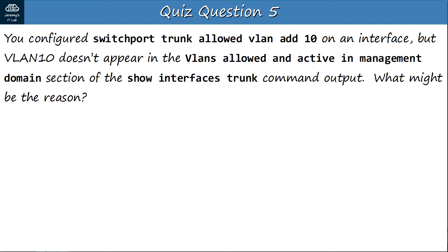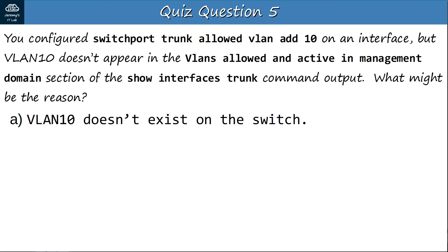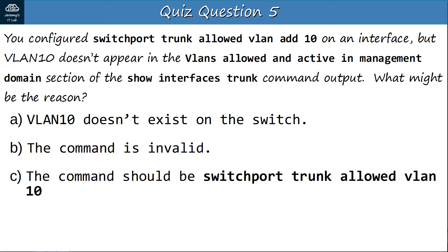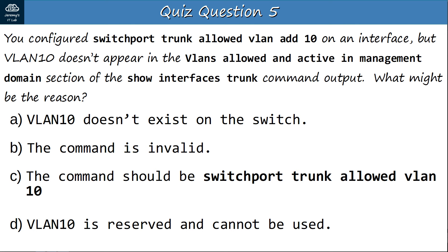Question 5: You configured 'switchport trunk allowed vlan add 10' on an interface, but VLAN10 doesn't appear in the VLANs allowed and active in management domain section of 'show interfaces trunk'. What might be the reason? A: VLAN10 doesn't exist on the switch. B: the command is invalid. C: the command should be 'switchport trunk allowed vlan 10'. D: VLAN10 is reserved and cannot be used. The answer is A — if a VLAN doesn't exist on the switch, even if it is allowed on the trunk, it won't appear in the VLANs allowed and active in management domain section.